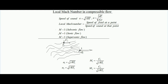The local Mach number is defined at a particular point. If a compressible fluid flows and at point 1 the fluid velocity is C1 and the temperature is T1, then the local Mach number M1 = C1 / √(γRT1), i.e., speed of fluid at that point divided by speed of sound at that point. Similarly at point 2, M2 = C2 / √(γRT2). So the local Mach number is always the ratio of fluid speed to the local speed of sound.